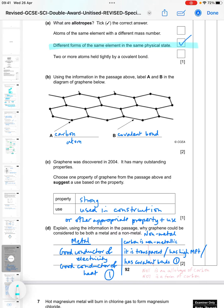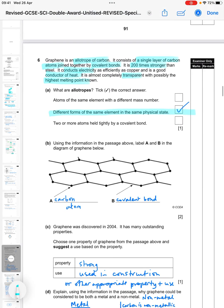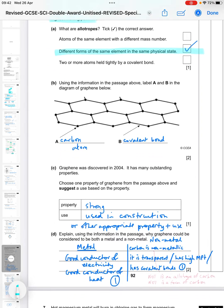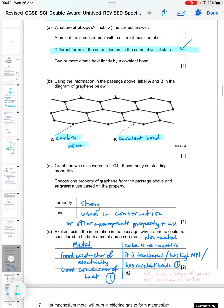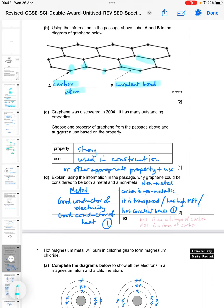Then using the information in the passage above, label A and B in the diagram of graphene below. So it's a single layer of carbon atoms joined by covalent bonds. So here we go - carbon atom and covalent bond. The carbon atoms are these little spots, and the covalent bonds are the lines in between.